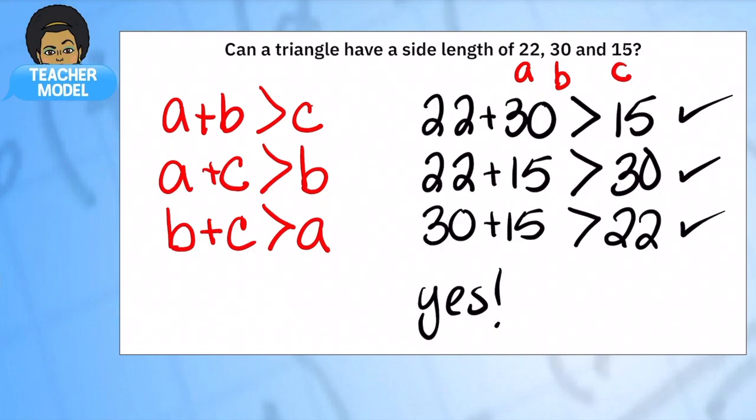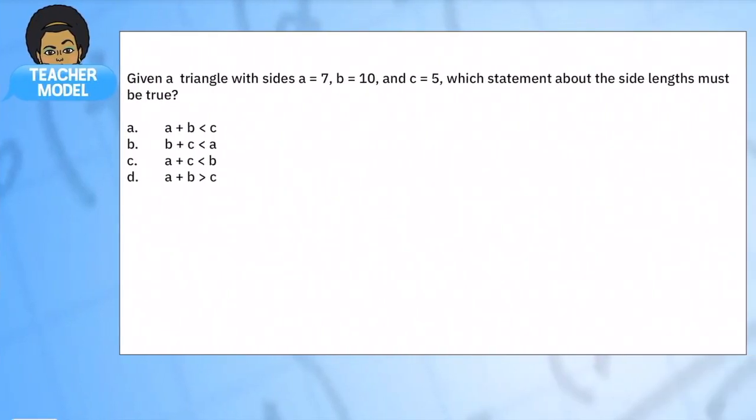Let's try another one. And you can see they've actually given us the statement here: given a triangle with sides 7, 10, and 5, which statement about the sides must be true? I remember what we said - it means that the sum of any two sides has to be bigger than the third.